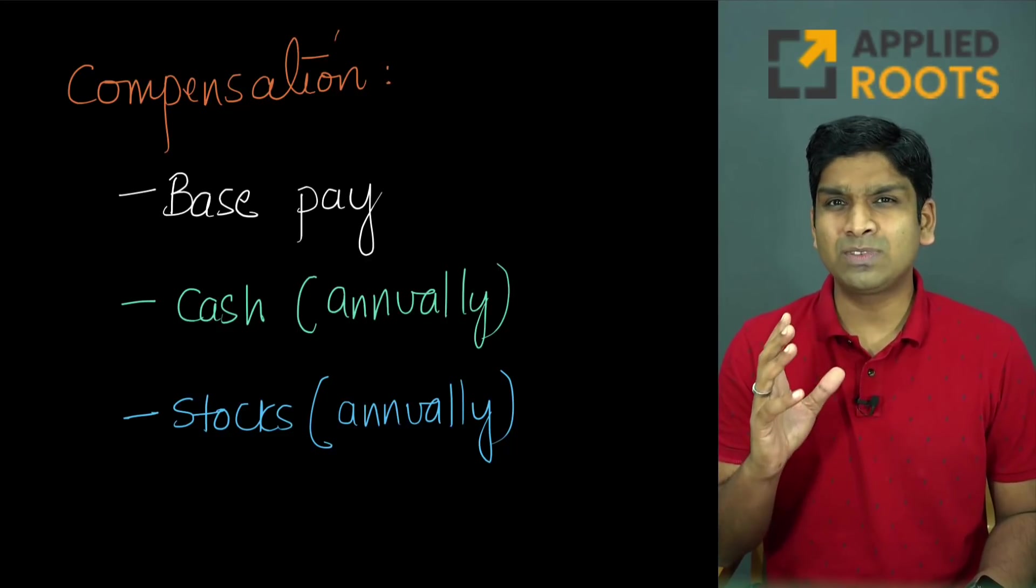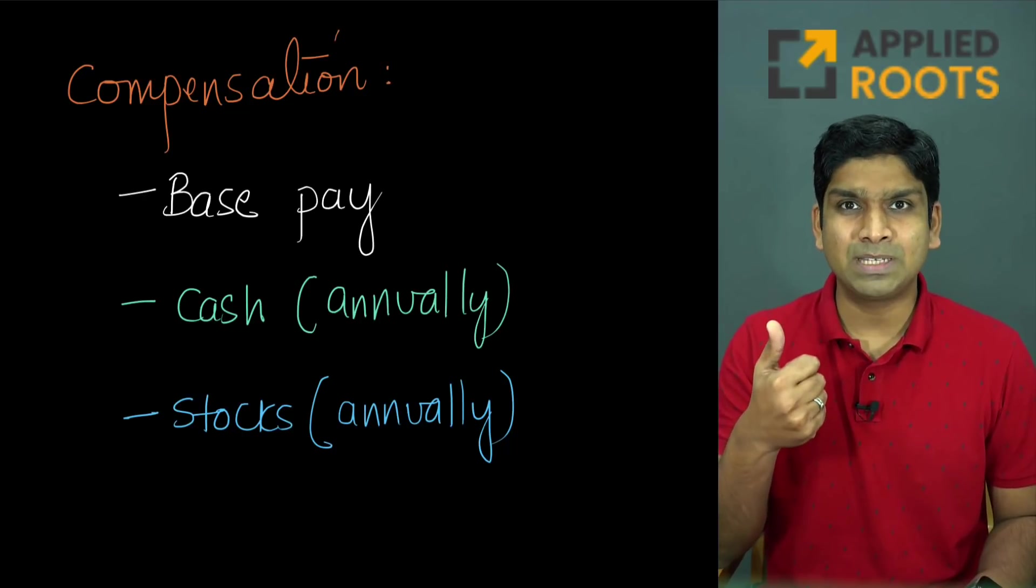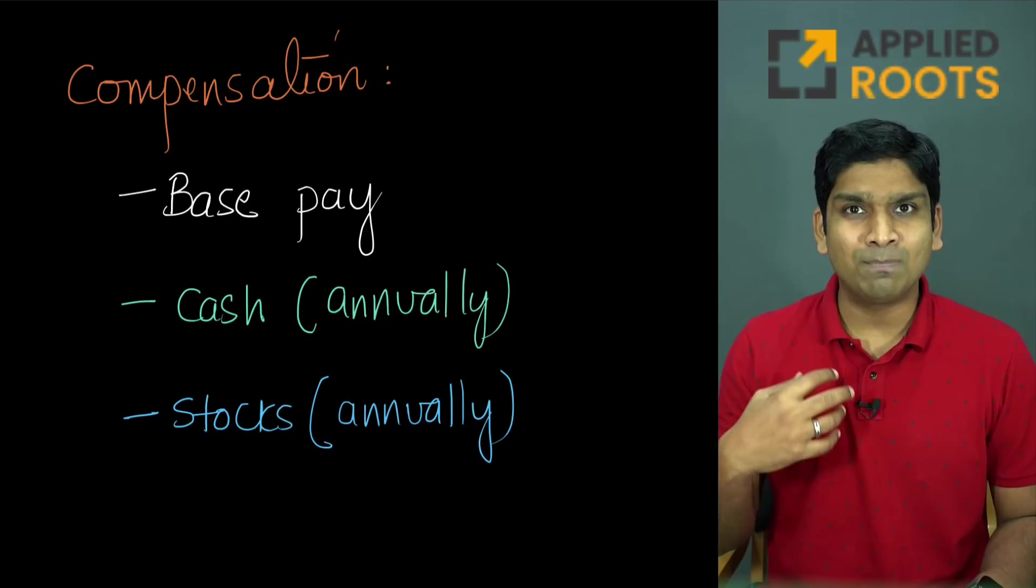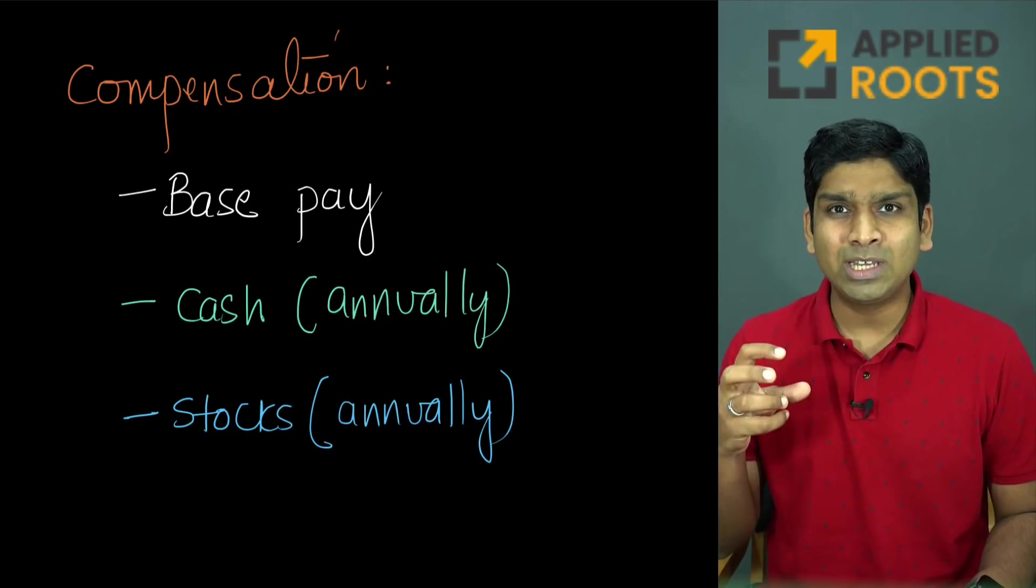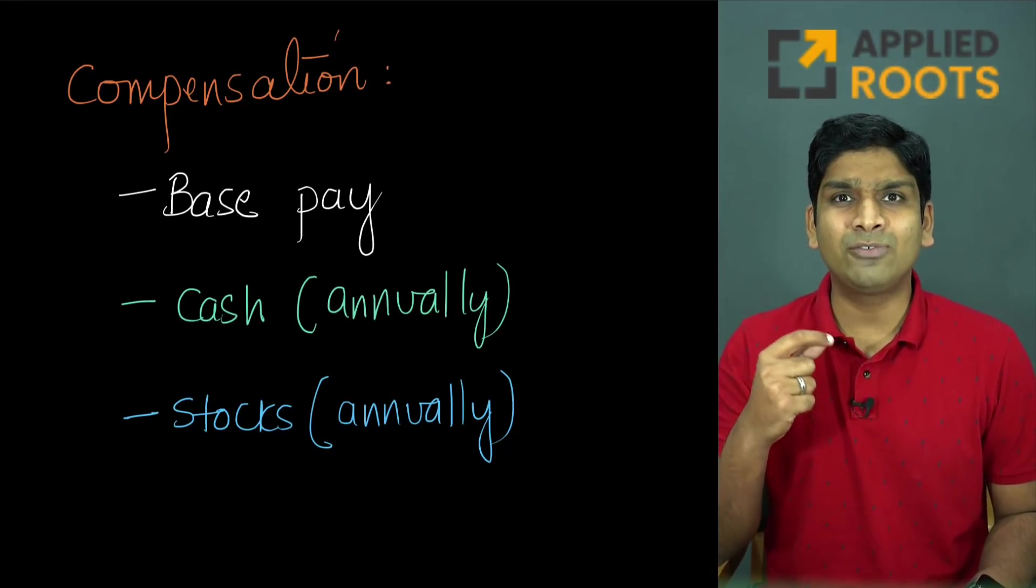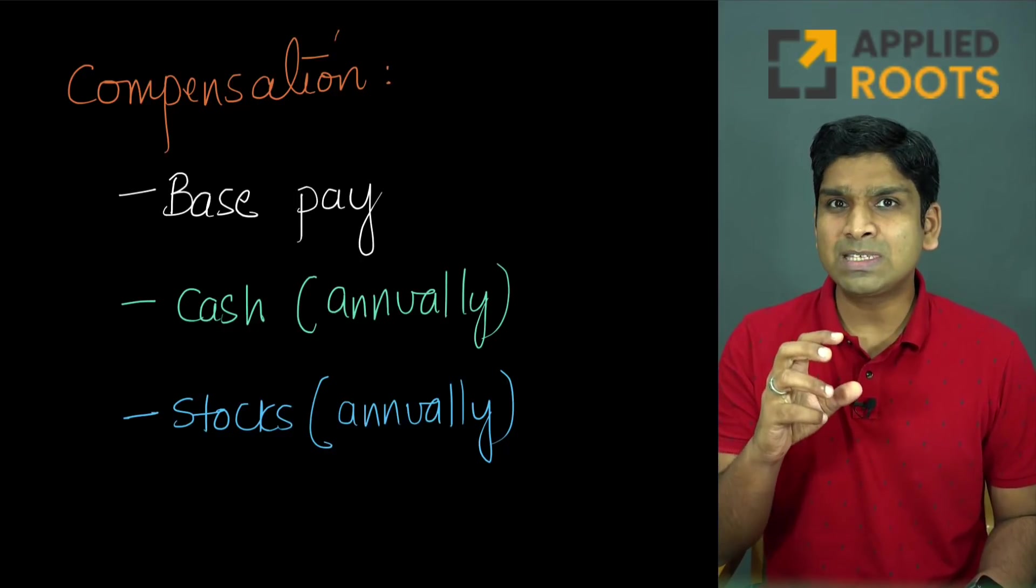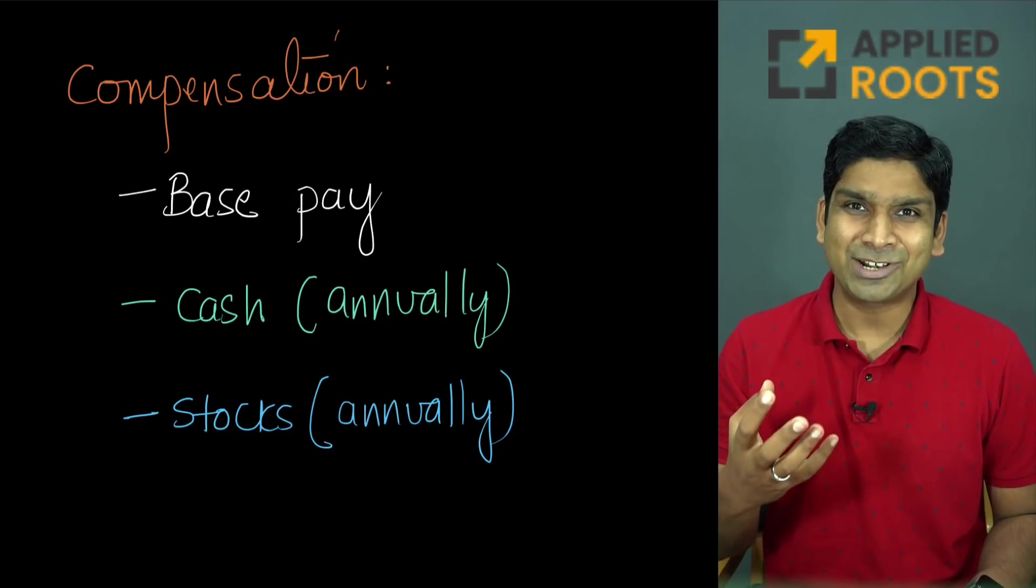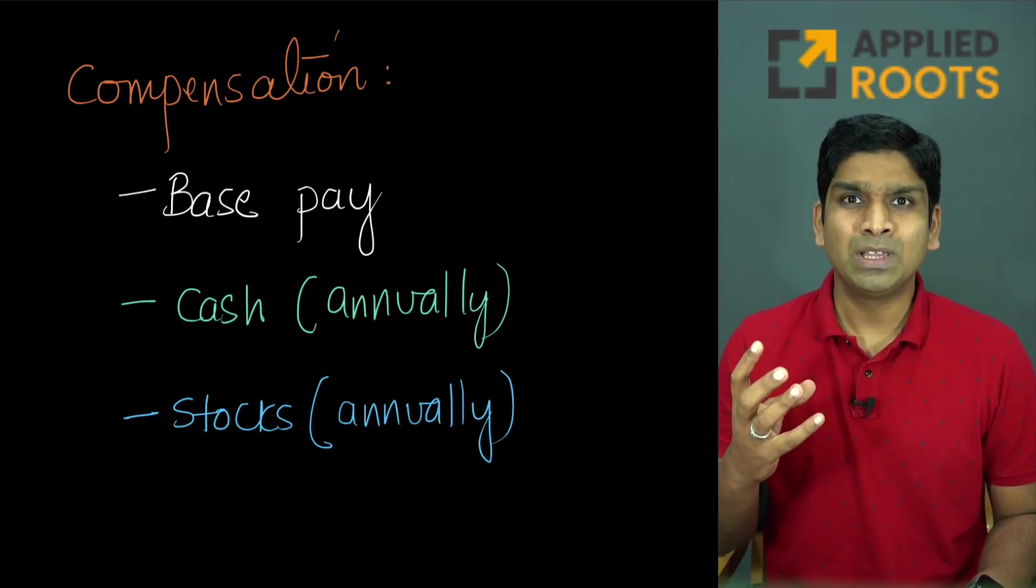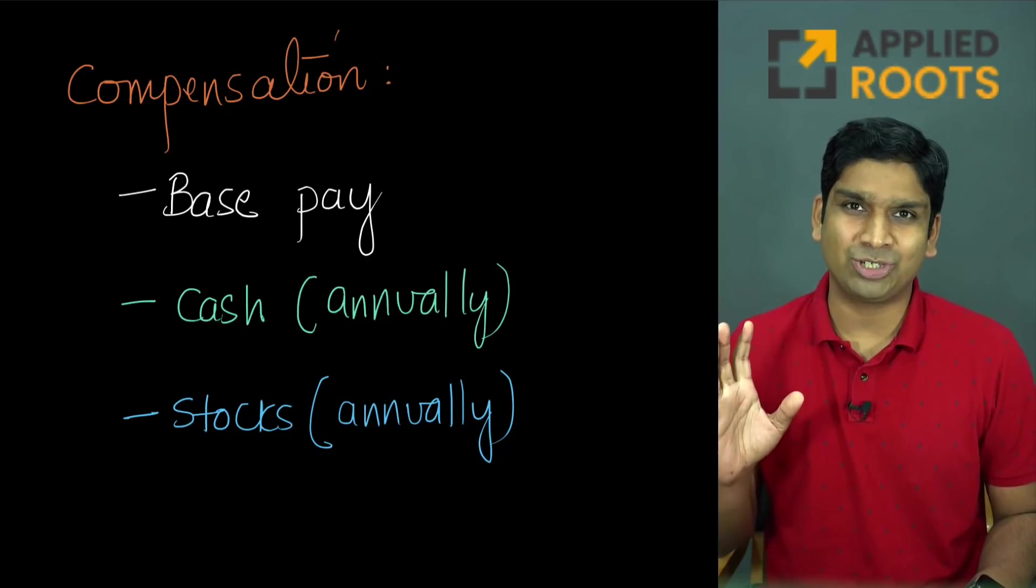The compensation at most of these companies have multiple components. You typically have the base compensation which is given to you as cash on monthly basis. You also have cash component that is either given annually or half yearly. Then you also have the stock component that is often given either every six months or every 12 months. For most of these companies since they are publicly traded you can sell the stock as soon as you get it within just a few days.